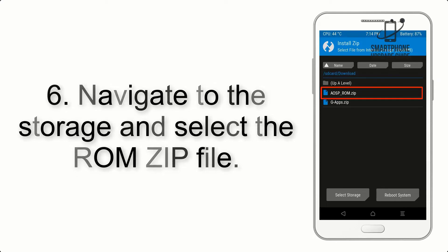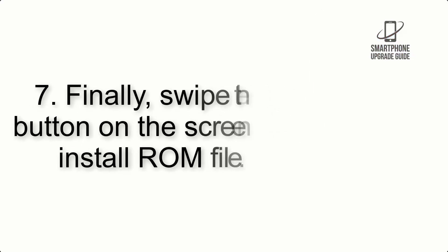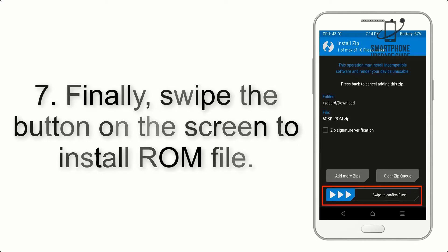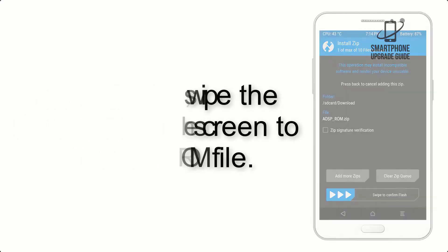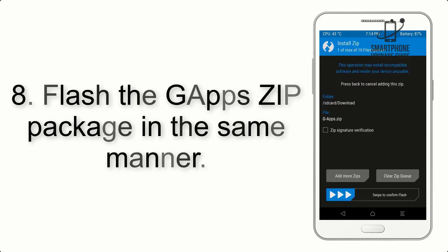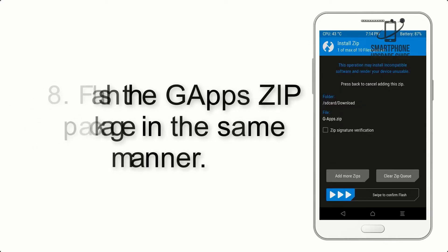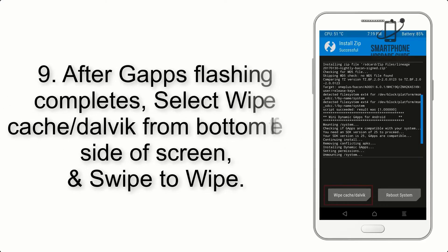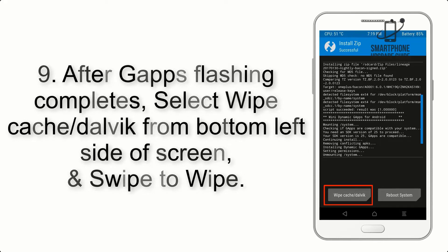Step 5: Go back to the recovery main screen and tap on the Install button. Step 6: Navigate to the storage and select the ROM zip file. Step 7: Finally, swipe the button on the screen to install the ROM file. Step 8: Flash the GApps zip package in the same manner.